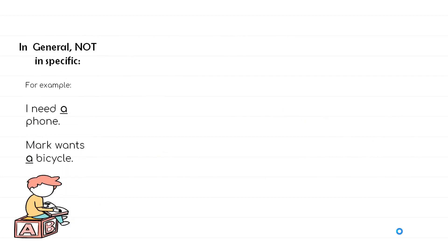When we talk about indefinite articles, we refer to things in general and not specifically. For example, 'I need a phone' and 'Mark wants a bicycle.' The person is talking about a phone in general — he didn't specify which one. Similarly, Mark wants a bicycle, but we don't know which bicycle. The person is speaking generally and didn't specify.